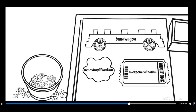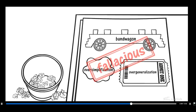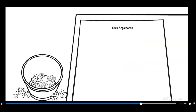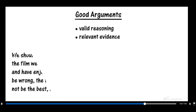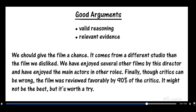These types of arguments are fallacious, or faulty — the stuff of internet memes and website comment sections. To make a convincing argument, you'll want to avoid these pitfalls. A good argument uses valid reasoning and relevant evidence. Valid reasoning addresses the issue at hand without oversimplifying, overgeneralizing, or evading the counterclaims. Relevant evidence supports the claim without exaggerating or relying on questionable sources.